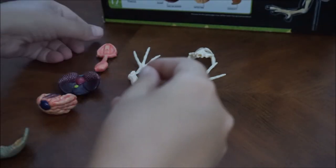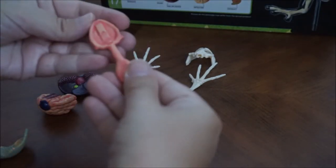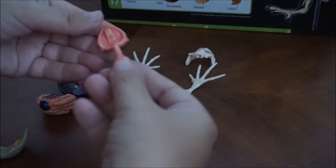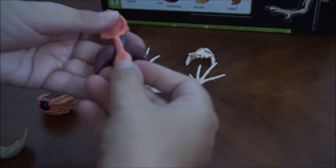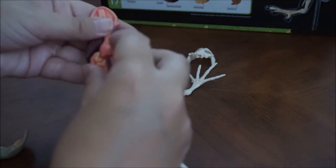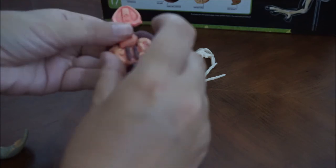Some of the pieces have multiple organs on them, like you will see that the tongue and esophagus and stomach are all one piece. The trachea, lung, liver, heart, and gallbladder are all on one piece.